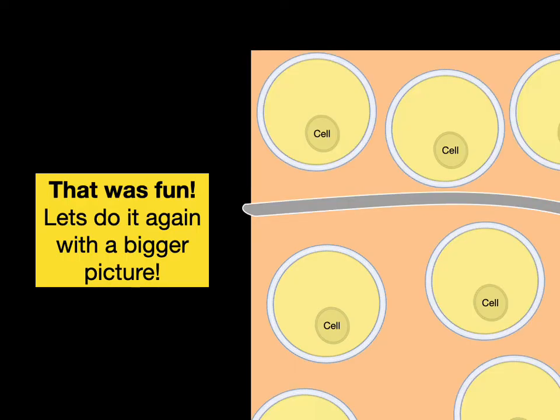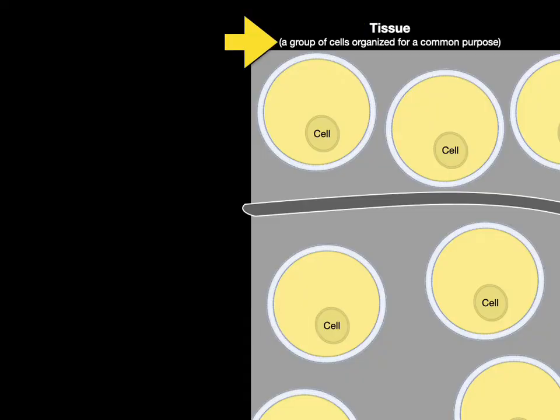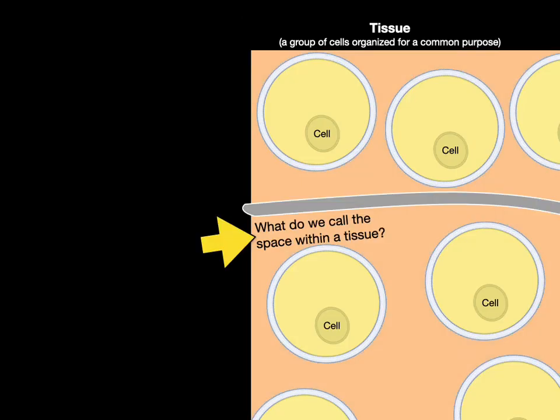Let's do it again, except with a bigger picture and add some cells. So there's a cell, another one, another one. A tissue is simply a group of cells organized for a common purpose. Now, what do we call the space within the tissue? We call it interstitial. Inter, between, stitial fluid, the interstitial space, which is containing interstitial fluid.